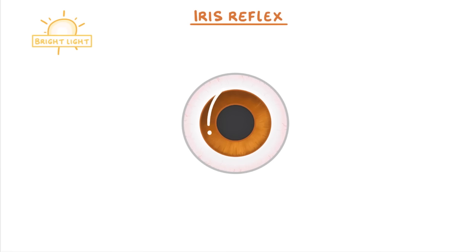In very bright light conditions, like when you are outside in the sun or you look towards a lightbulb, the intensity of the light can actually cause damage to your retina.